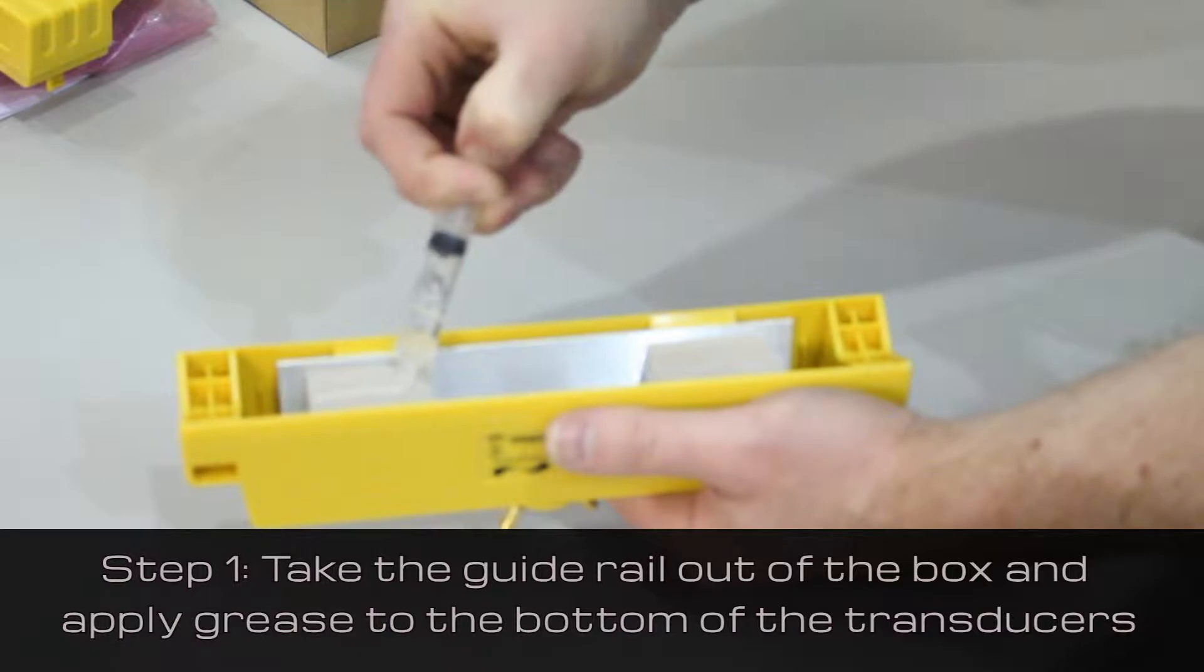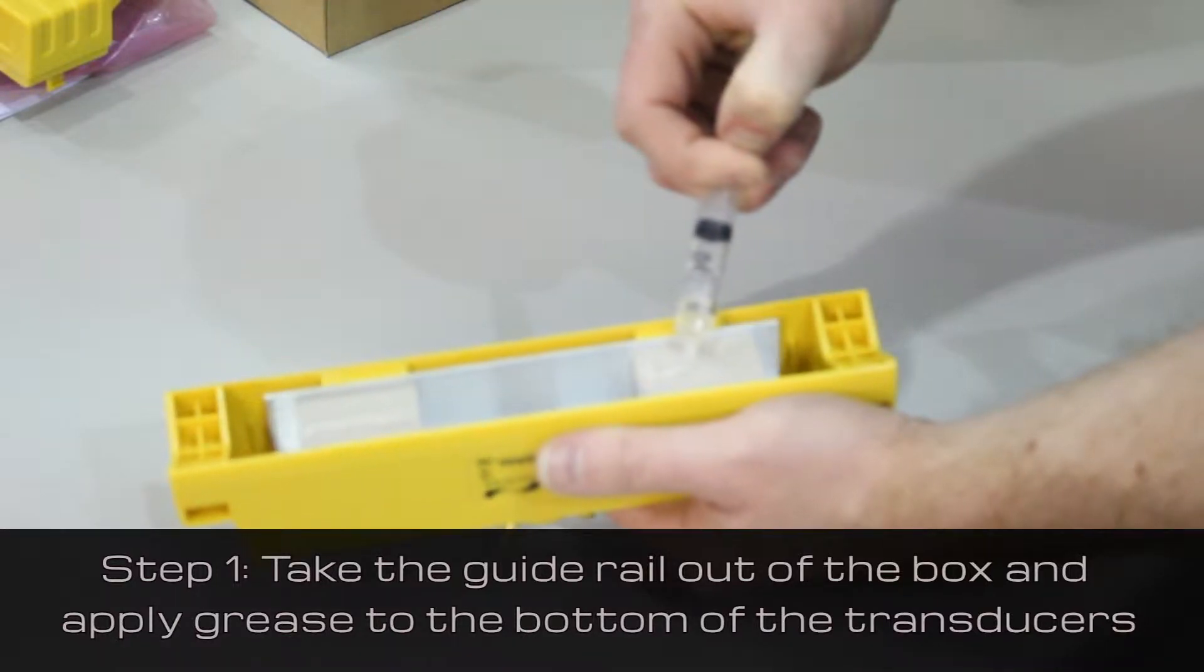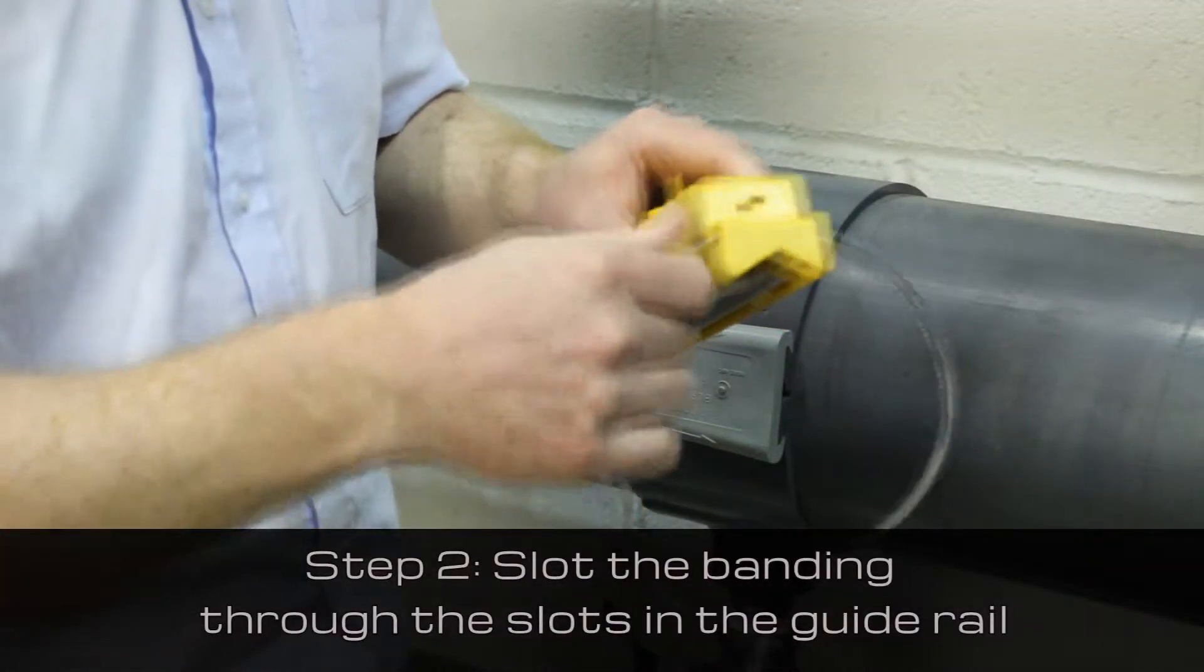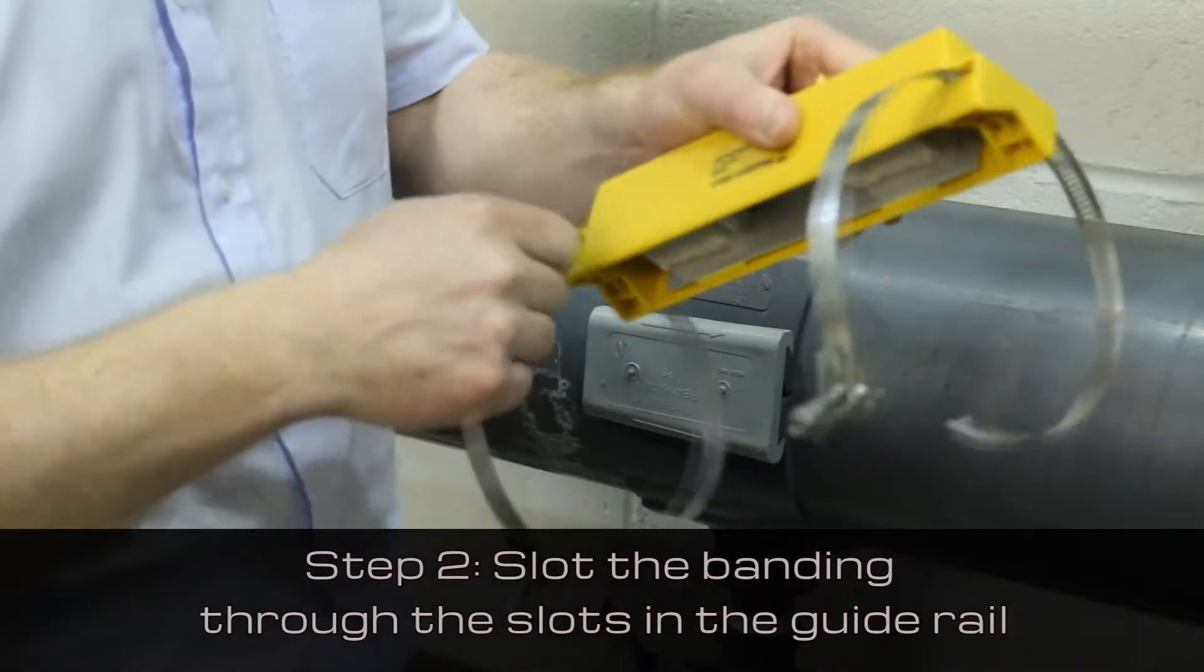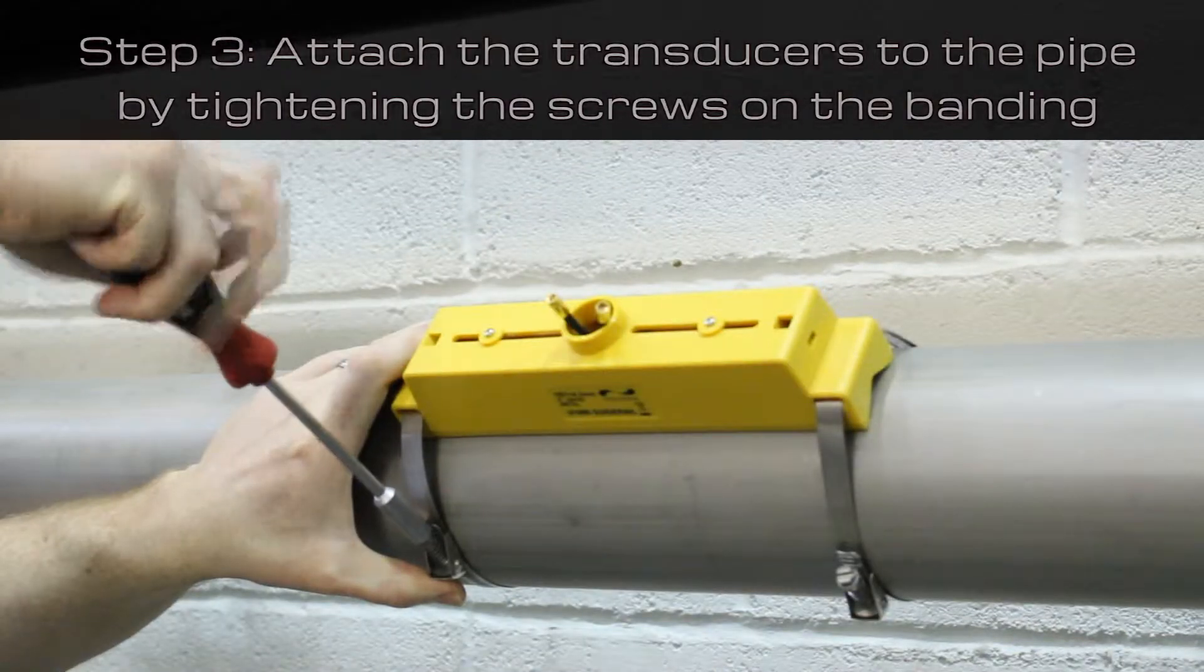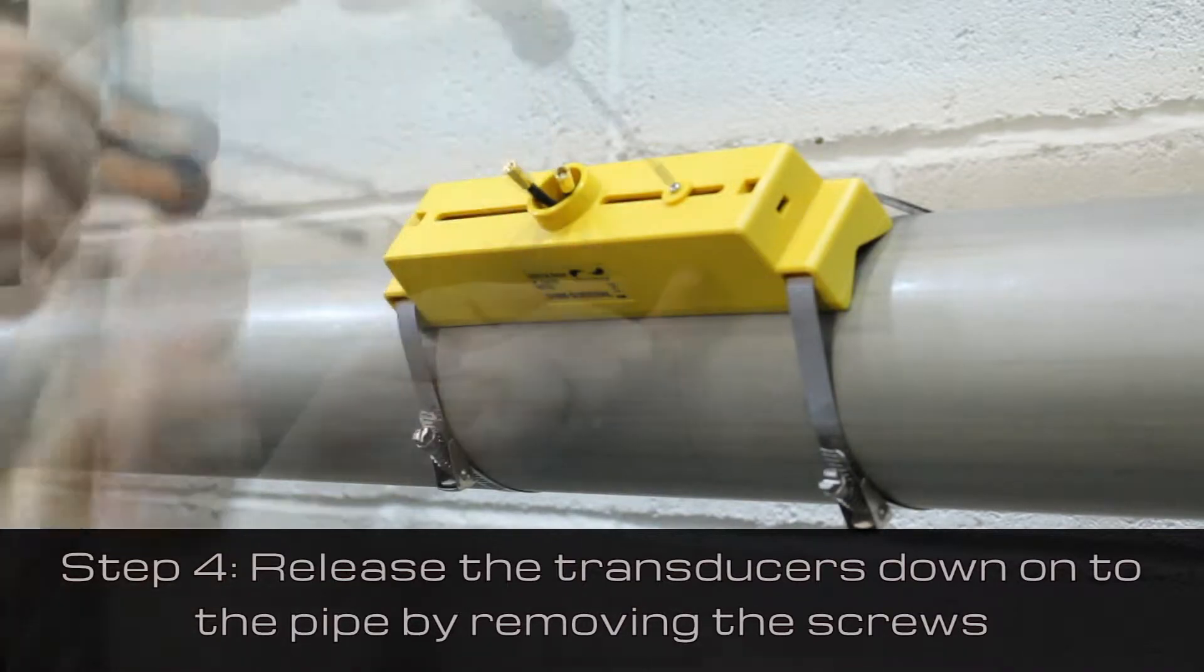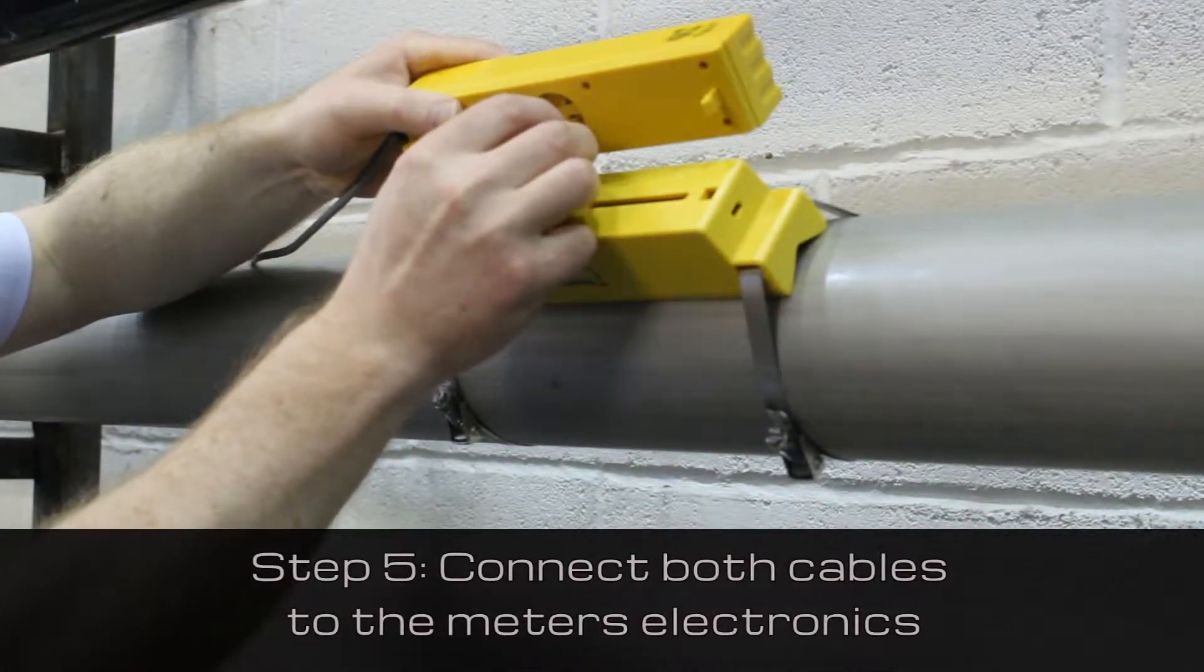First, take the guide rail out of the box and apply grease to the transducers. Then slot the provided banding through the slots in the guide rail. Next, attach the transducers to the pipe by tightening the screws on the banding. Release the transducers down onto the pipe by removing the screws, then connect both cables to the meter's electronics.